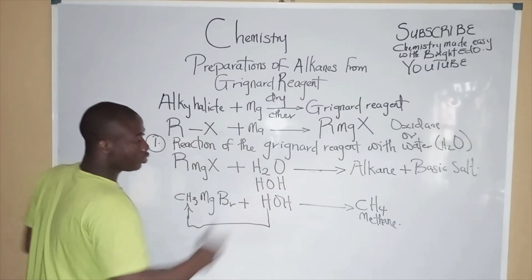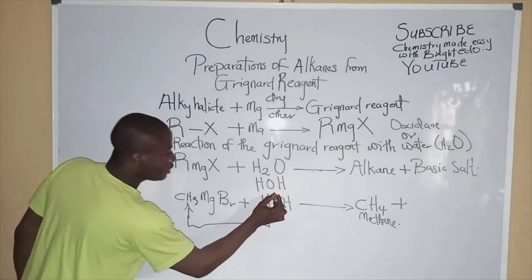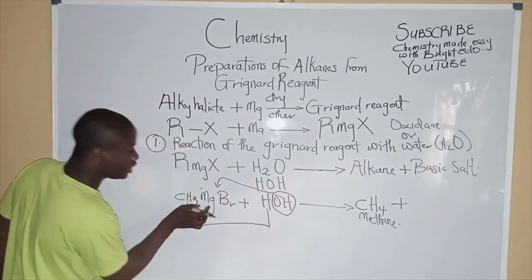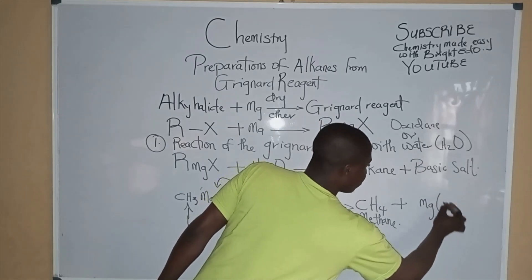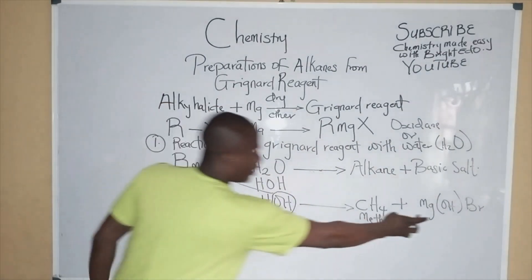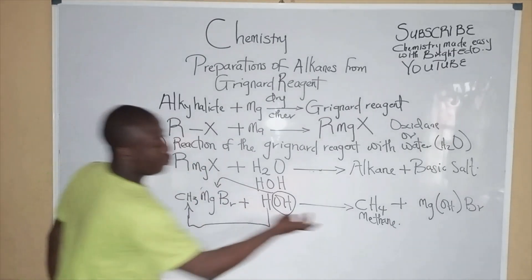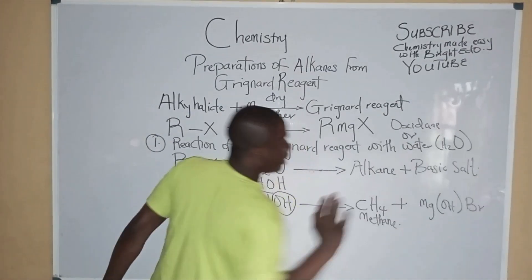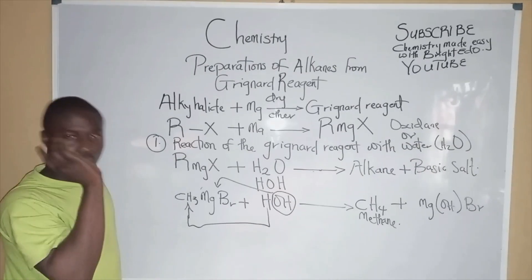The other product we get is a basic salt. The hydroxyl group combines with MgBr, so our product becomes Mg(OH)Br. This is the basic salt formed whenever the Grignard Reagent reacts with water. We got methane plus the basic salt Mg(OH)Br.